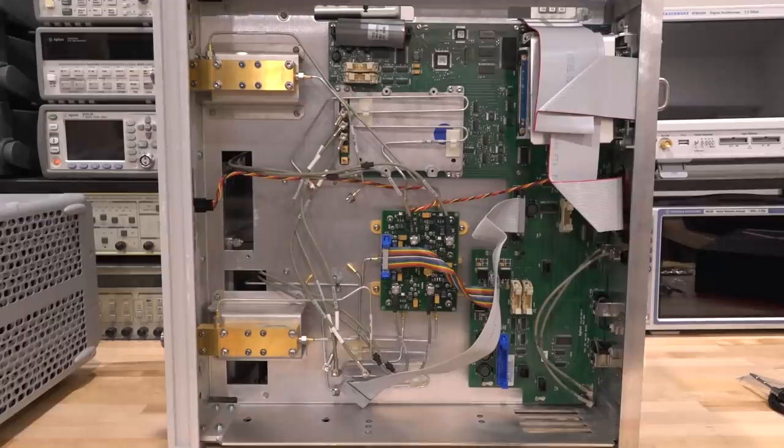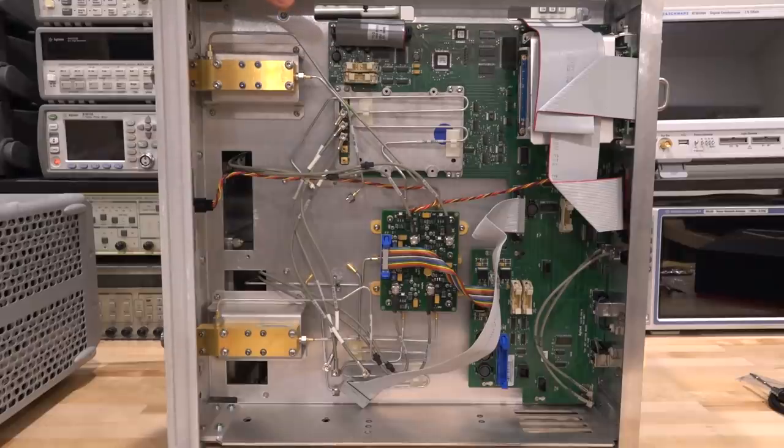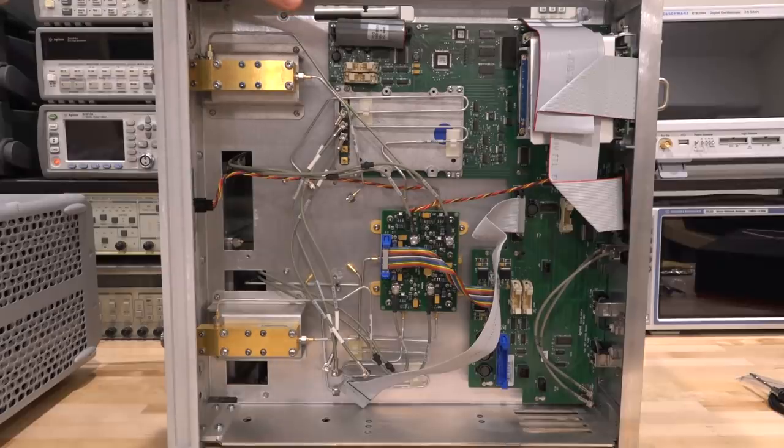Hi, welcome to SignalPath. In this episode, we're going to take a look at the second part of the repair for the Agilent N5230A 2-port network analyzer. This is a 13.5 GHz network analyzer.